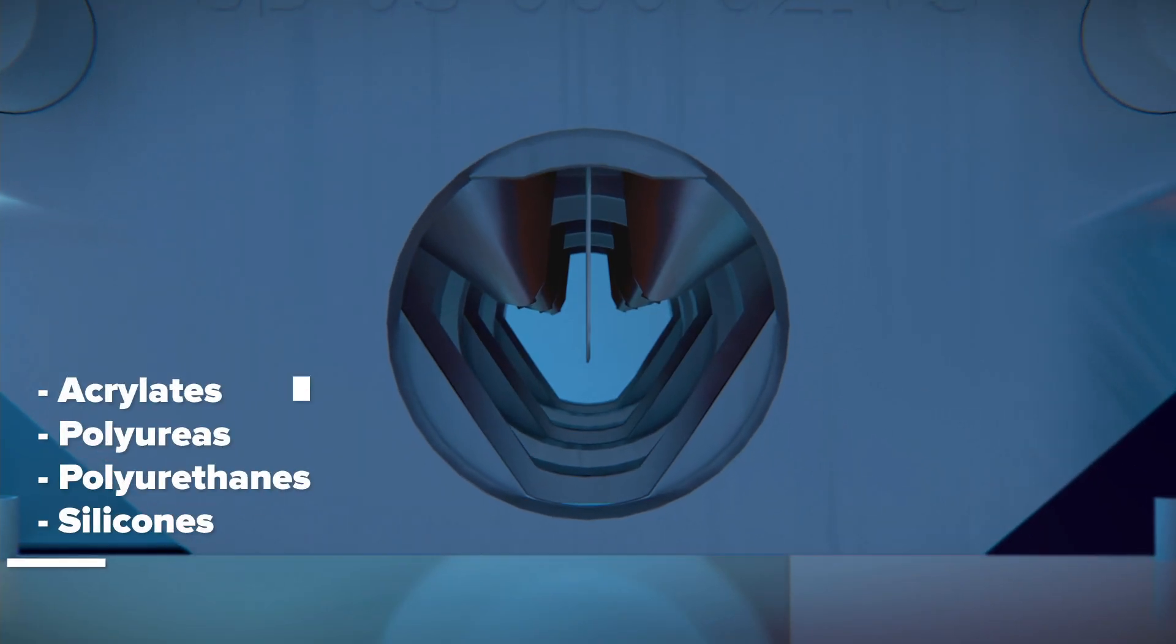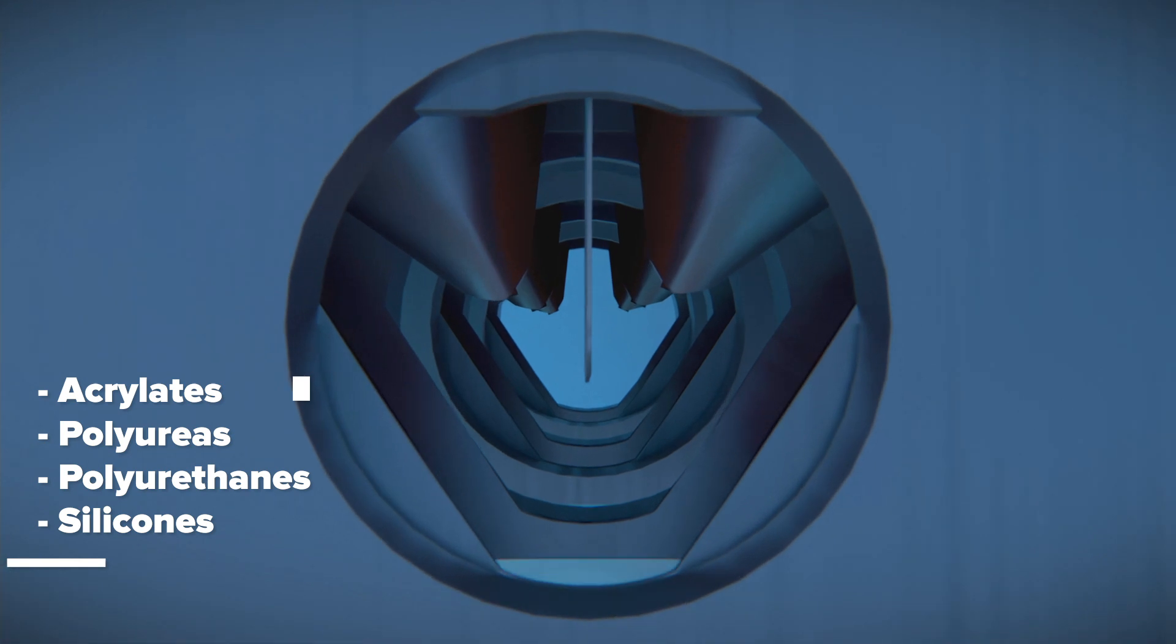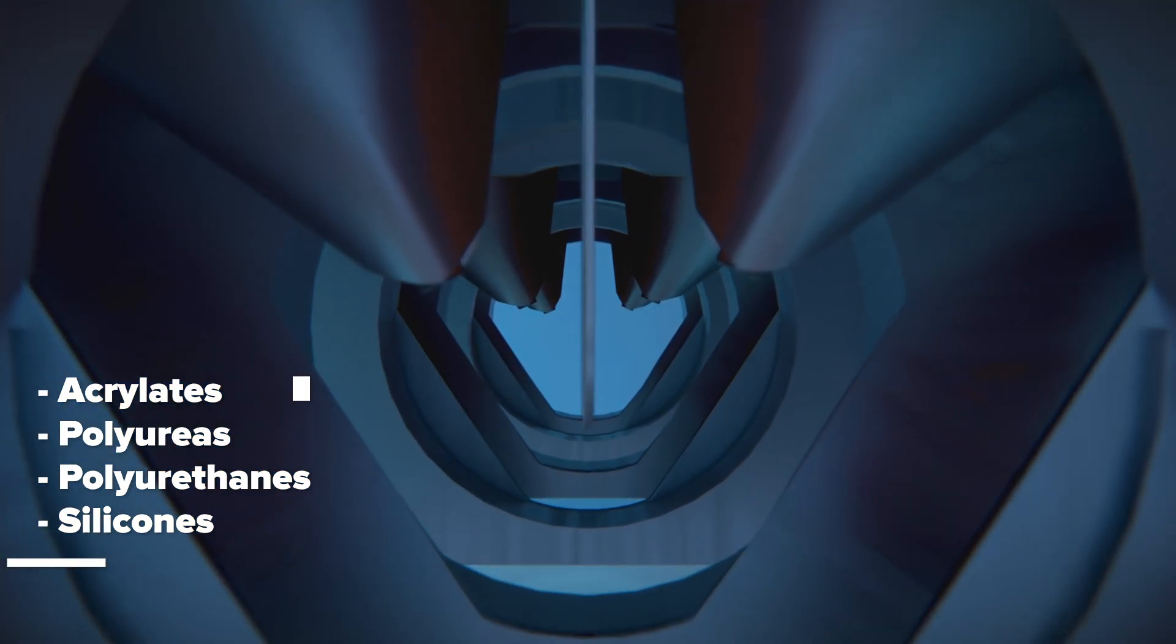It is possible to make acrylates, polyureas, polyurethanes, as well as silicones all during one print.